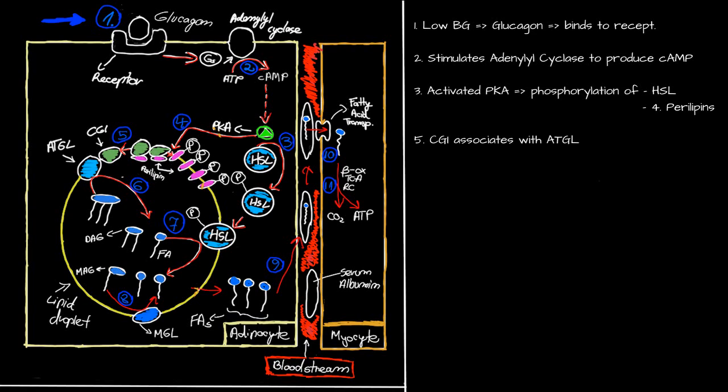This leads to the dissociation of CGI protein from perilipin, which then associates with adipose triacylglycerol lipase, or ATGL.